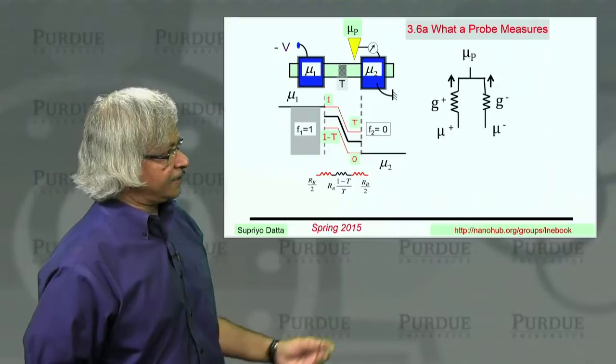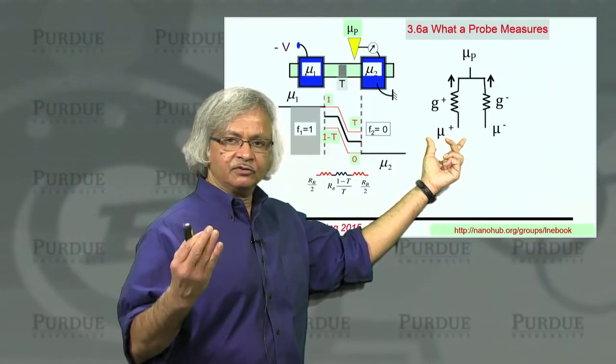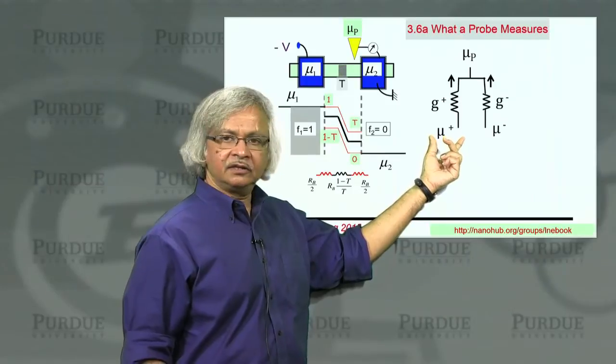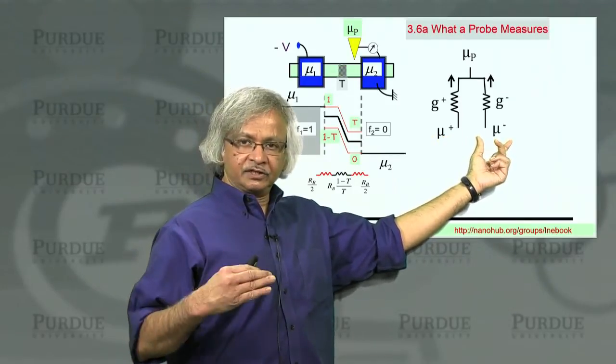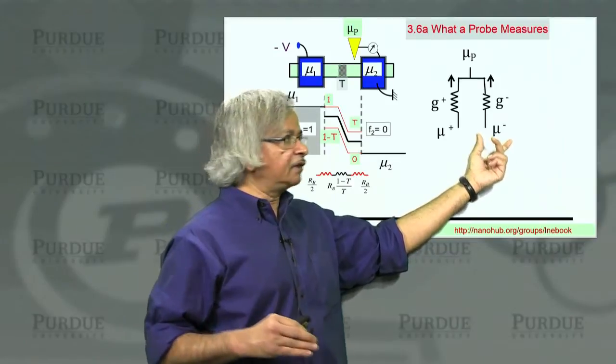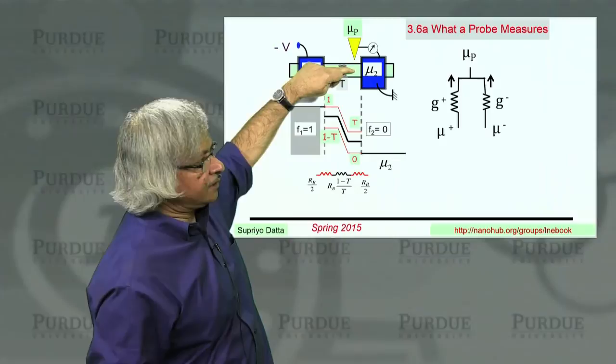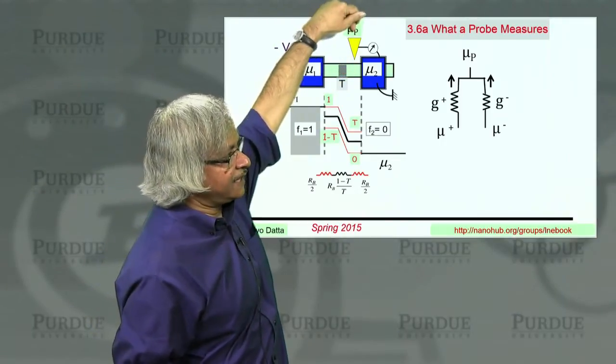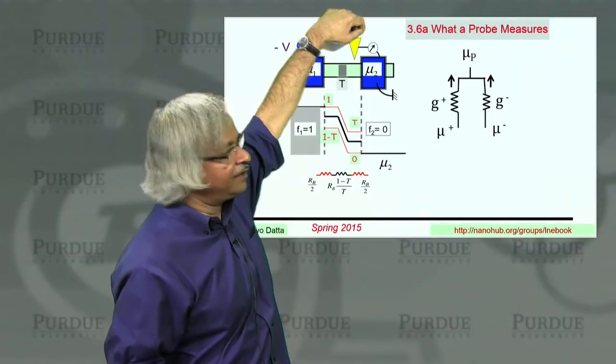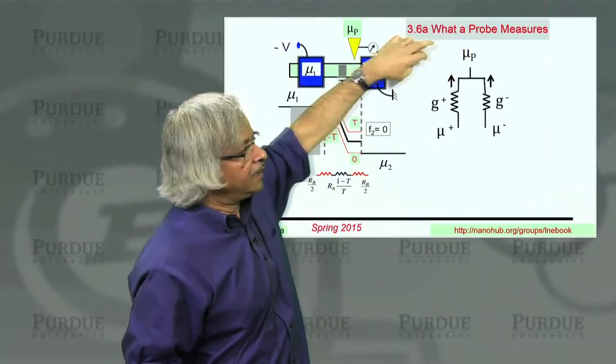Well, you could think of it like this. You've got one group of states, the right-moving states, with a quasi-Fermi level mu plus. Another group of states, the left-moving states, with a quasi-Fermi level of mu minus. And these are things inside the channel. And then you have this probe whose potential is mu p. That's this accessible quantity from outside, which this voltmeter measures.